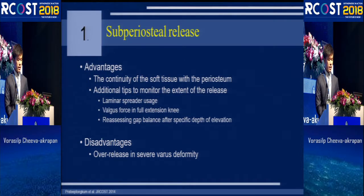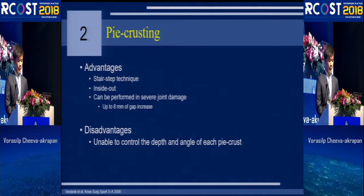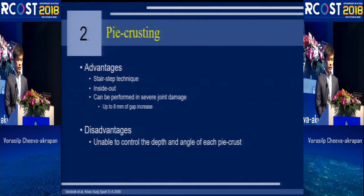Regarding discussion, the subperiosteal release has the advantage of continuity of soft tissue with the periosteum, and additional tips can be used to monitor the extent of release. The disadvantage is that over-release can occur in severe varus deformity. For pie-crusting, this is a step-by-step technique performed inside-out, avoiding neurovascular injury, and can be performed in severe joint damage, but we cannot fully control the depth and angle of the pie-crust.